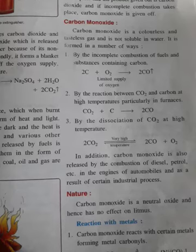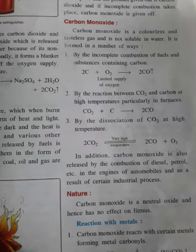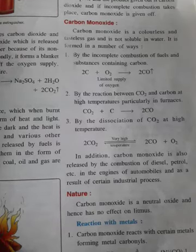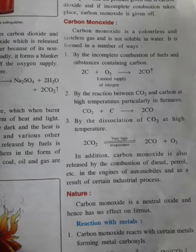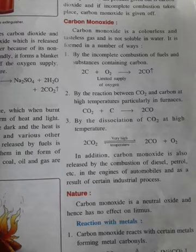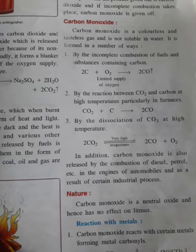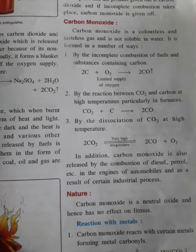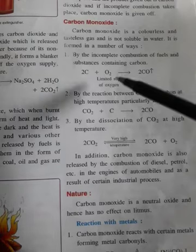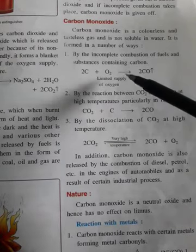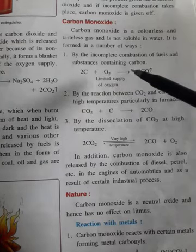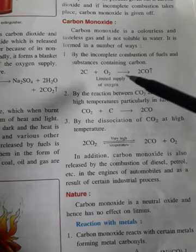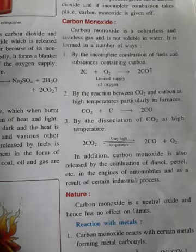It is formed in a number of ways; one by one we are going to discuss each and every one. Method number one: carbon monoxide is produced by incomplete combustion of substances containing carbon. When fuels burn in a limited supply of oxygen — when the amount of air is less and the amount of oxygen is not sufficient — the product will be carbon monoxide, and this process is known as incomplete combustion.